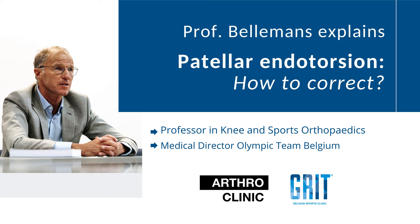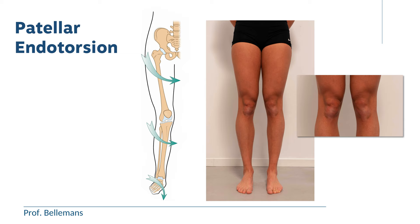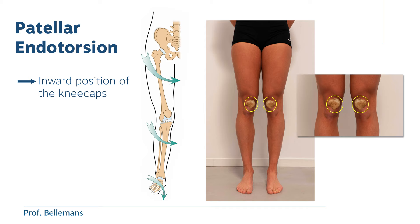Patellar endotorsion is one of the most under-recognized causes of knee pain. In this video I will explain how you can detect and correct this problem. Patellar endotorsion means literally inward torsion or inward position of the kneecaps. It usually occurs on both knees but often one knee is more pronounced than the other. Sometimes this is also called kissing knees because it seems as if the two patelli are kissing each other. Patellar endotorsion is one of the most commonly overlooked causes of knee pain.